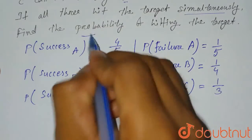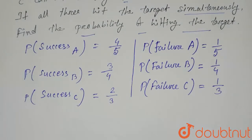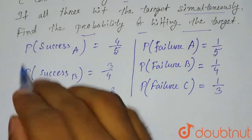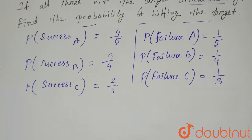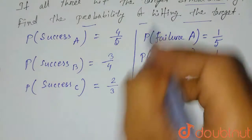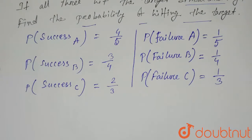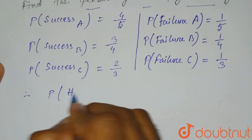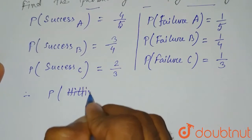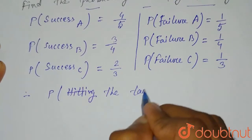Now what we have to find: we have to find the probability of hitting the target, which means at least one of them has to hit the target. That means if we find that no one could hit the target and subtract it from 1 — we are subtracting the probability we don't want from the total probability — we can easily get the probability of hitting the target.